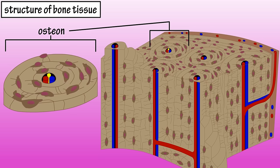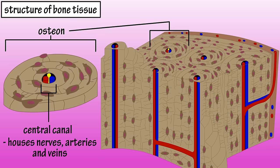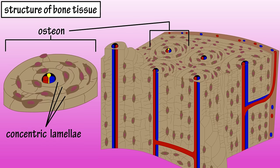In the middle of these osteons is a central Haversian canal that runs lengthwise through the bone, and it houses nerves and blood vessels that supply the bone with nutrients. The cylinder-shaped layers of the osteons are called concentric lamellae.